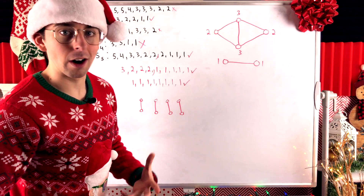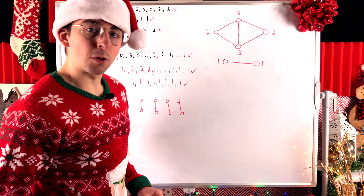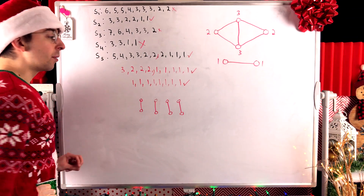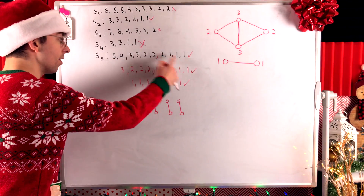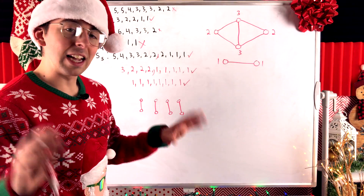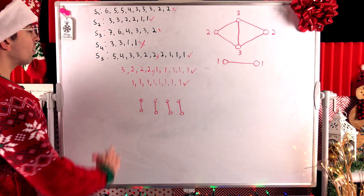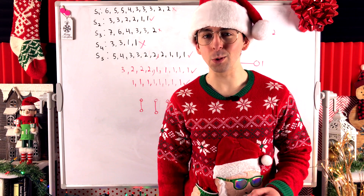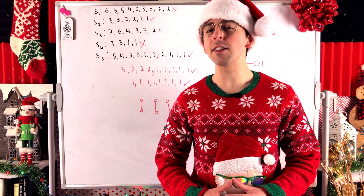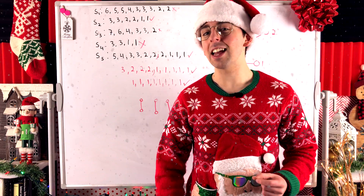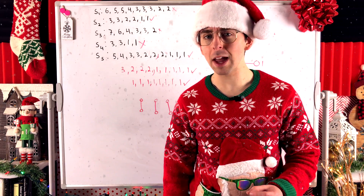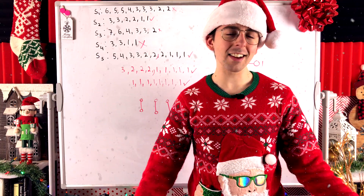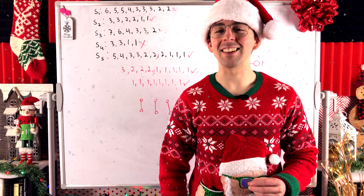That's the power of this theorem. We'll formally introduce and prove it in a later lesson, so subscribe so you don't miss it. If at the end we had obtained a sequence that definitely wasn't graphical, that would mean all previous sequences in the chain were also not graphical — it's a beautiful if-and-only-if theorem. I hope this video helped you understand these concepts. Let me know in the comments if you have questions or video requests. Thanks for watching — see you next time!